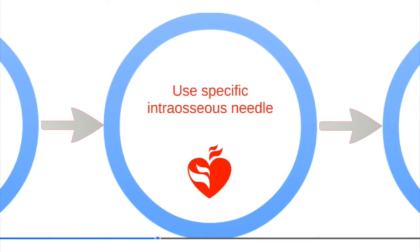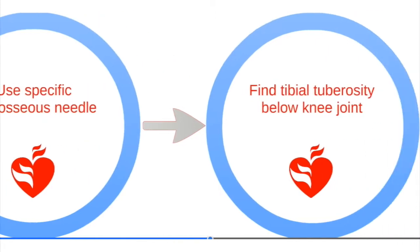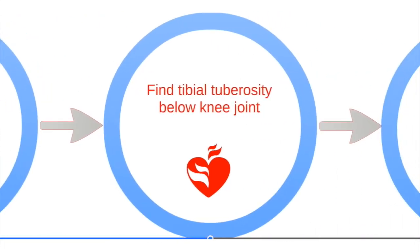Use a specific intraosseous needle, or a large bore needle, that is at least 18 gauge. Next, find the tibial tuberosity below the knee joint and stabilize the leg with slight external rotation.